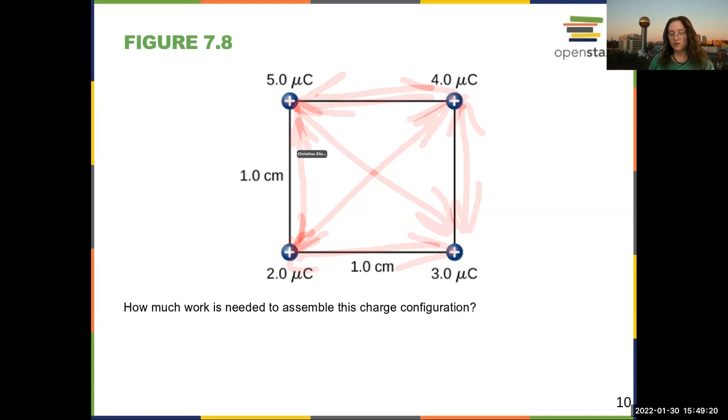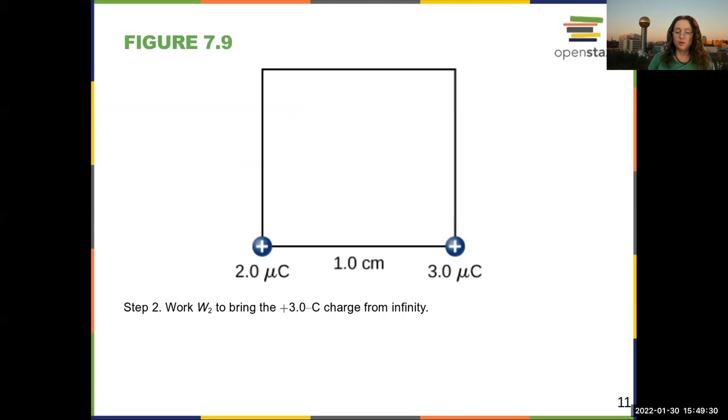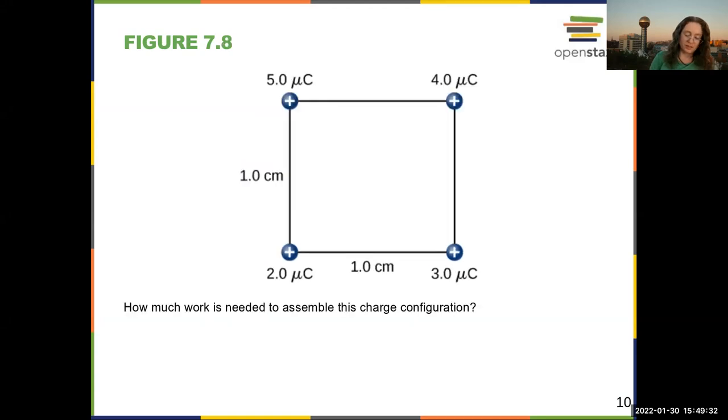So how do you know which to include? And the way to think about this is that you start with one charge. We're going to start with this charge right here and imagine for the moment that we just don't have these. We're going to imagine that these charges are not there yet. So when that charge is sitting there all alone, it has no potential energy. So there is no potential energy for this configuration.